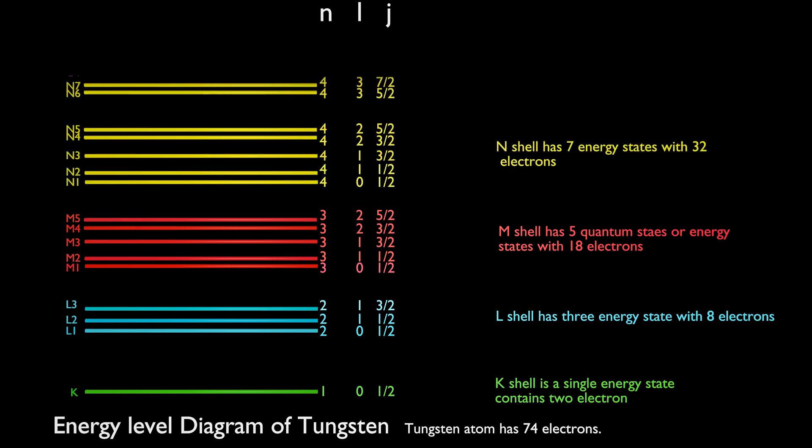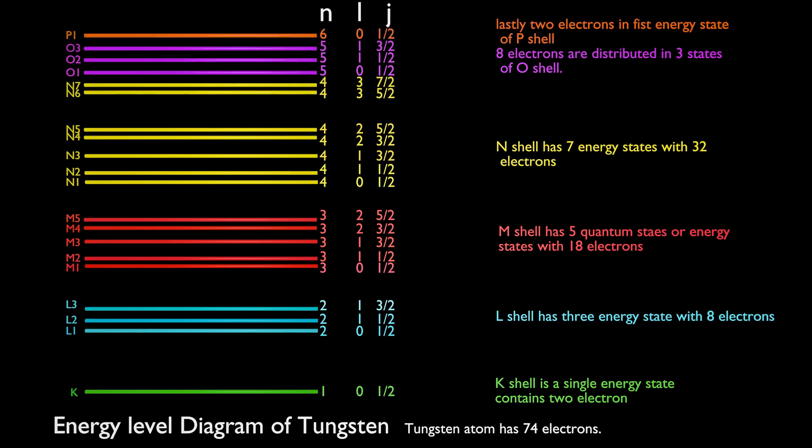N shell has 7 subshells containing 32 electrons. 8 electrons are distributed in 3 subshells of O shell. 2 electrons are present in 1 subshell of P shell.